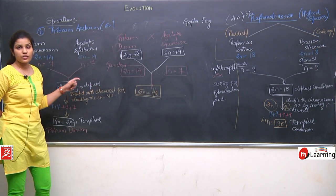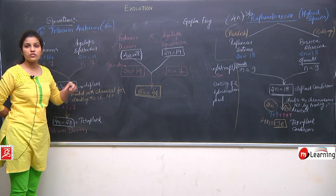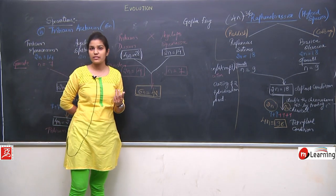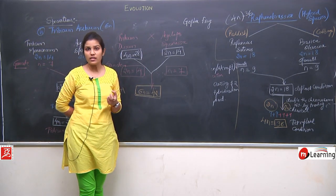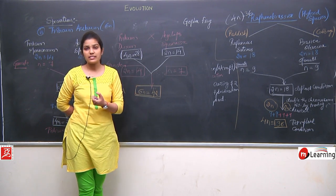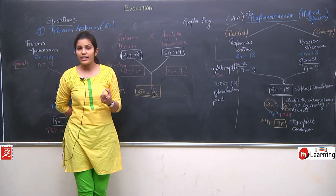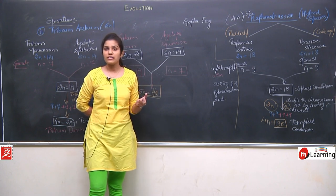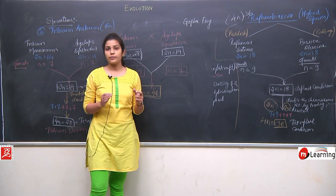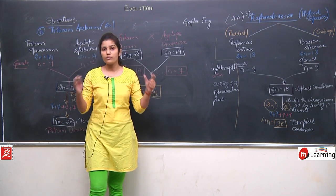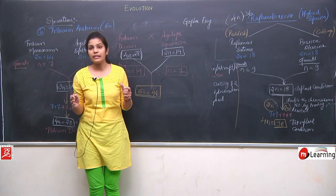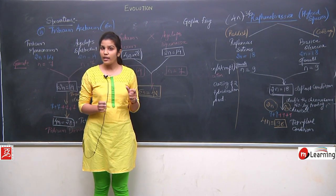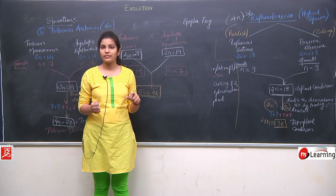This was the concept of speciation — how a new species is formed. In speciation, we studied two types: first was gradual speciation and the second was instant or sudden speciation. In gradual speciation, we talked about two means — allopatric speciation, which occurs by geographical barriers, and sympatric speciation. The example of Darwin's finches was given for allopatric speciation.